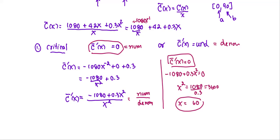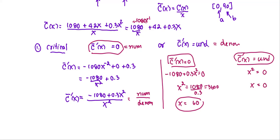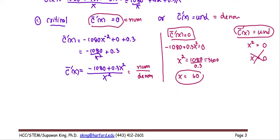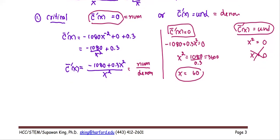Next, for the case where C̄' is undefined, we set the denominator x² = 0, giving x = 0. However, x = 0 is not an interior point of the interval (0, 90), so we discard it. Therefore, the only critical value is x = 60.